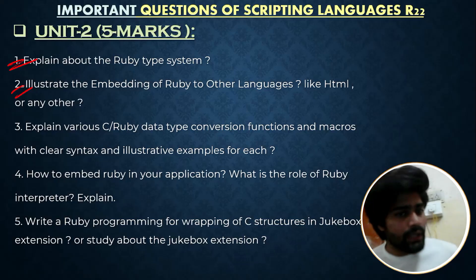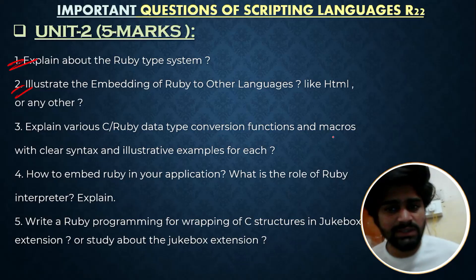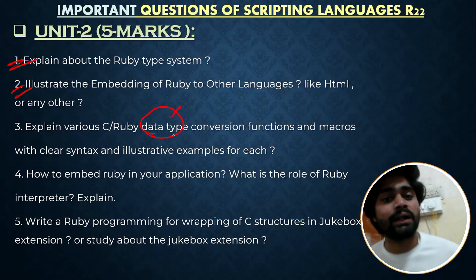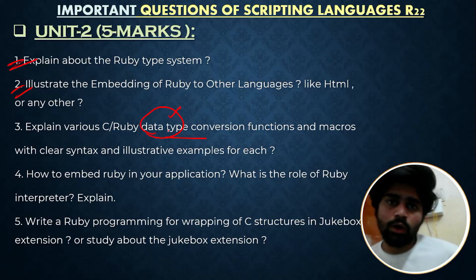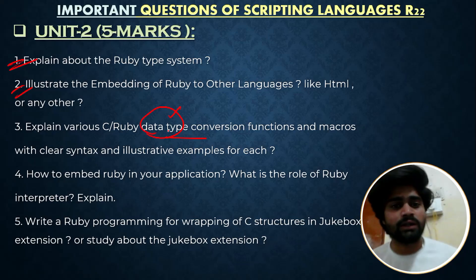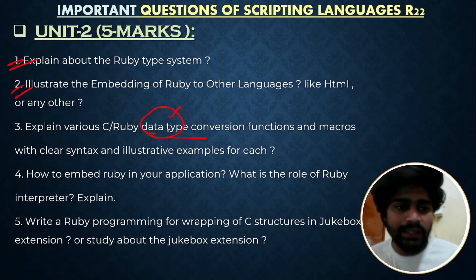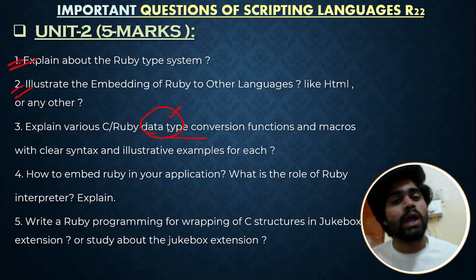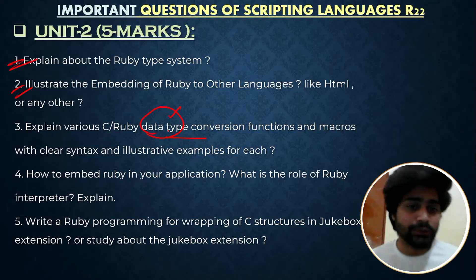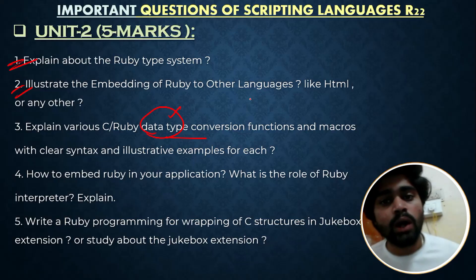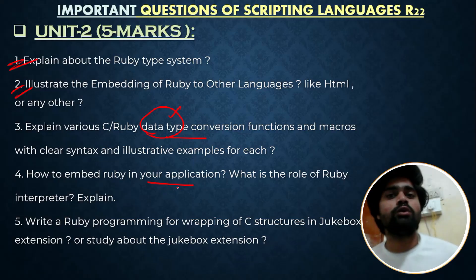Explain various C and Ruby data type conversion functions and macros with clear syntax and illustrative examples for each. Don't just study the data types — study the data type conversion examples as well. You already know that converting one type to another is called data type conversion, but here they are asking about functions and macros with clear syntax and examples. Also: how to embed Ruby in your application.